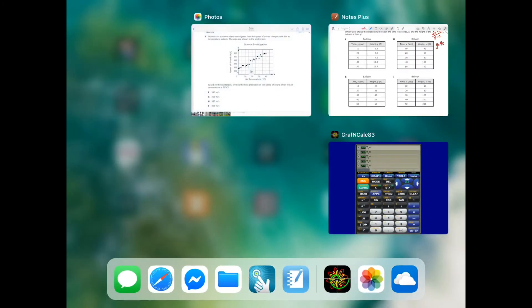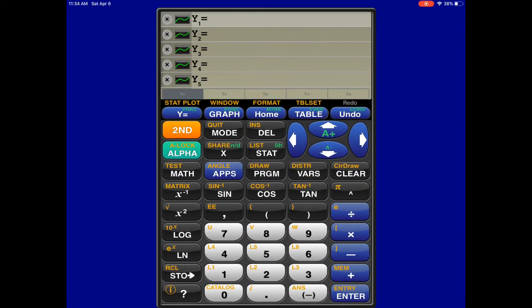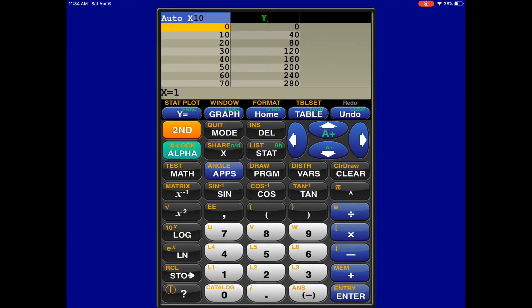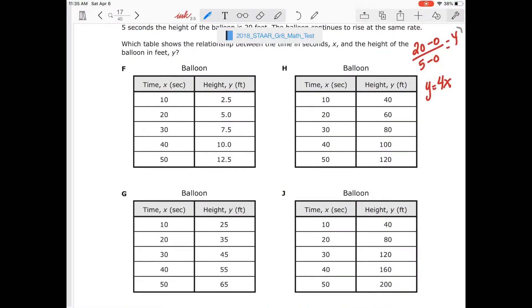So I'm going to go to my calculator, and I'm going to find out which table matches. I'm going to plug in my equation and go to my table. I got 40, 80, 120. I've got 40, 80. No, that doesn't even, not even close. Same with G, G is definitely not close. So I got 40, 80. Nope, it stops right there. So our answer choice is J.